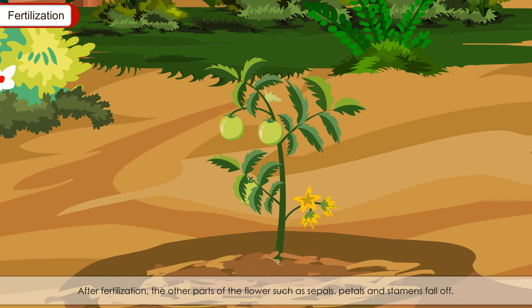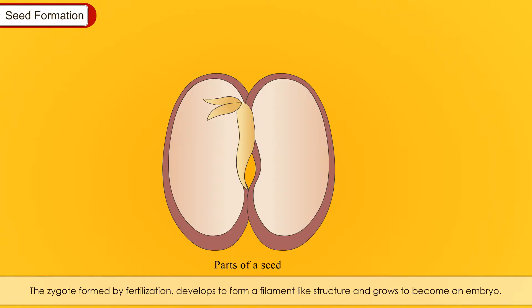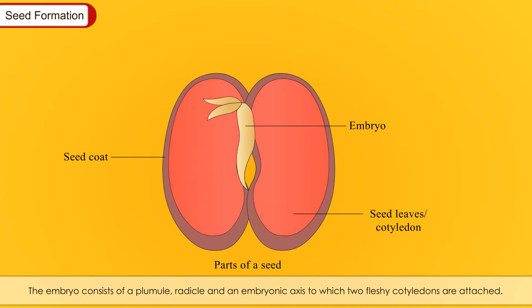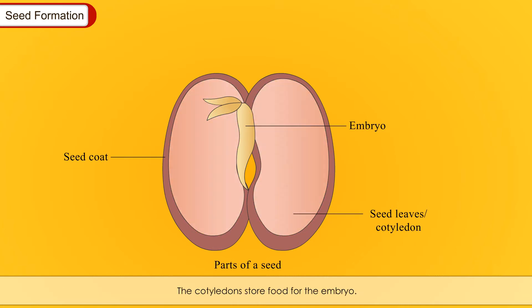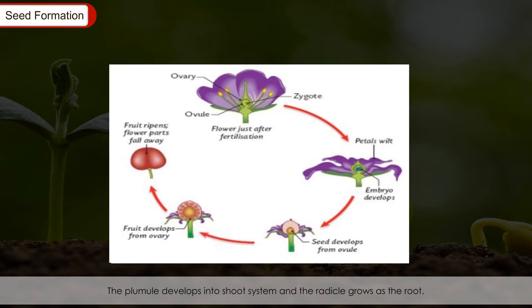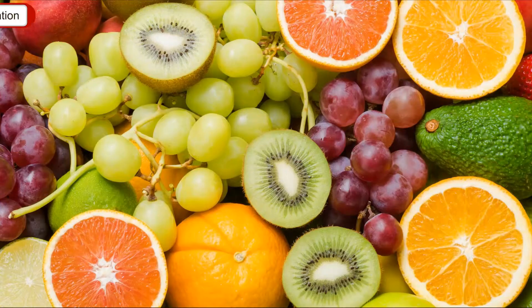After fertilisation, the other parts of the flower — sepals, petals and stamens — fall off. The zygote develops into an embryo. The embryo develops into a seed or mature ovule, while the surrounding ovary develops into a fruit. The embryo consists of a plumule, radicle and an embryonic axis, to which two fleshy cotyledons are attached; the cotyledons store food for the embryo. Seeds are attached to fruits by a stalk; on maturity this stalk gets detached, leaving a scar called the hilum. A protective layer called the seed coat covers the seed. The plumule develops into the shoot system and the radicle grows as the root.